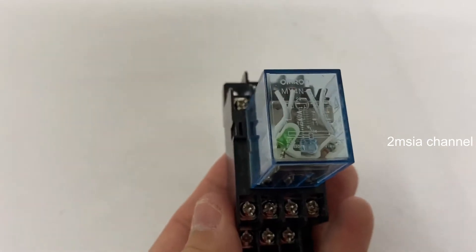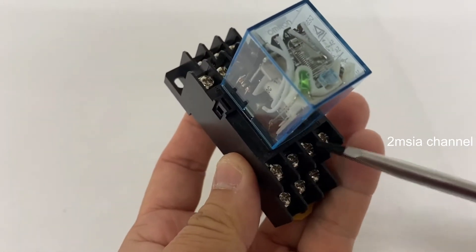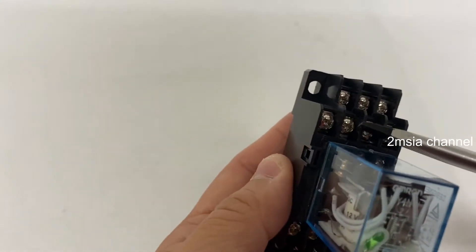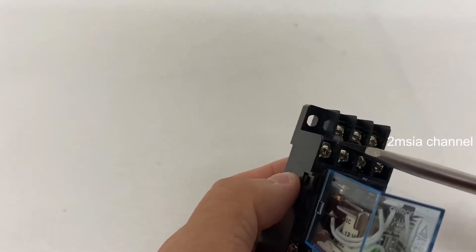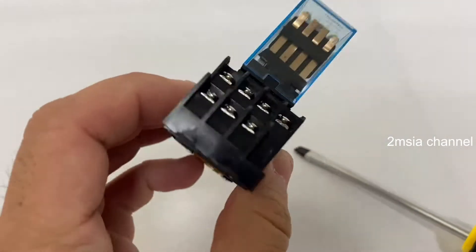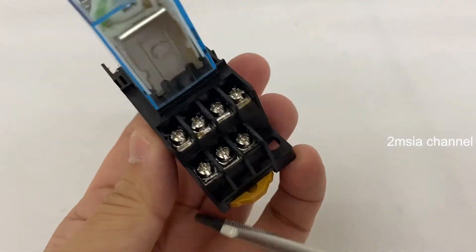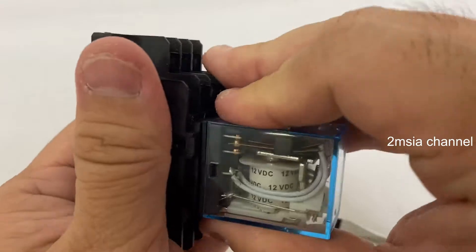Okay, so total is one, two, three, four, five, six, seven, eight, nine, ten, eleven, twelve, thirteen, fourteen. Fourteen slots, okay. So I just can pull it out.